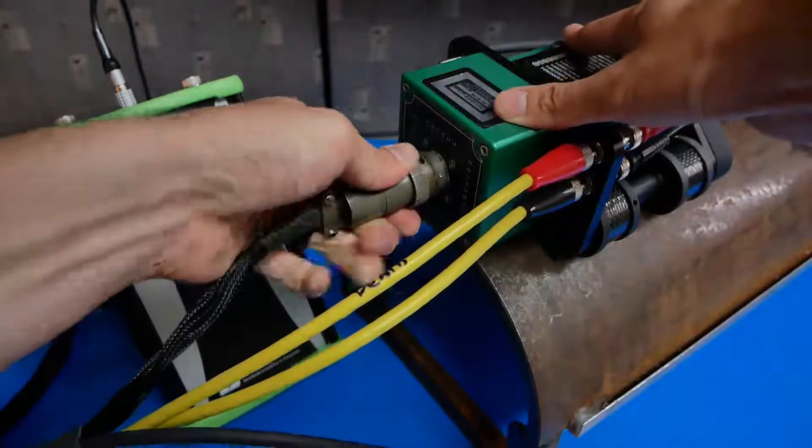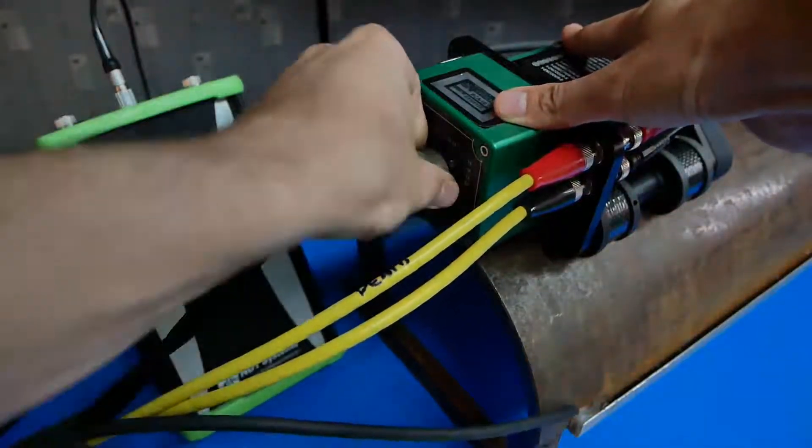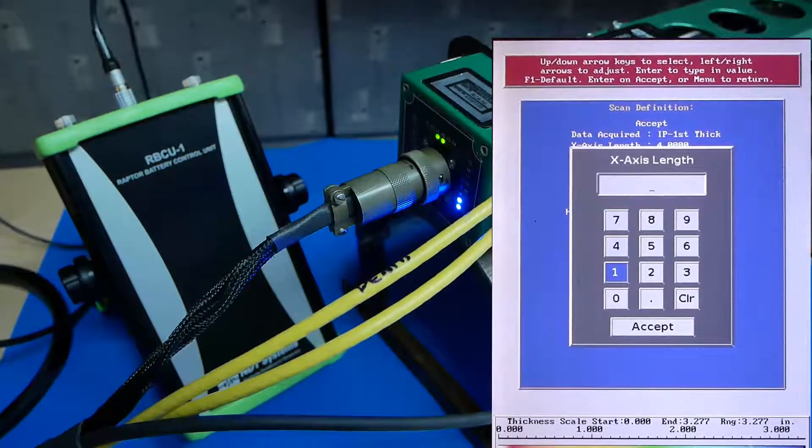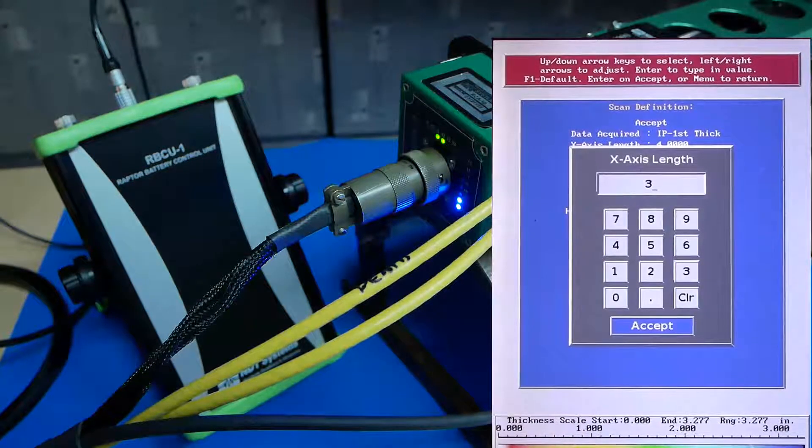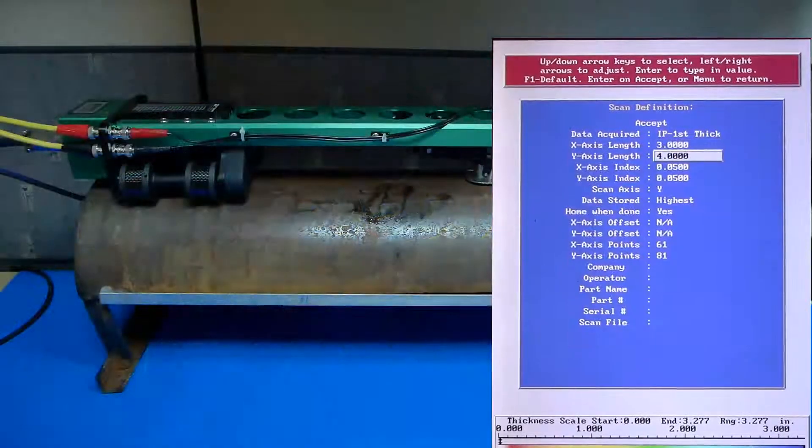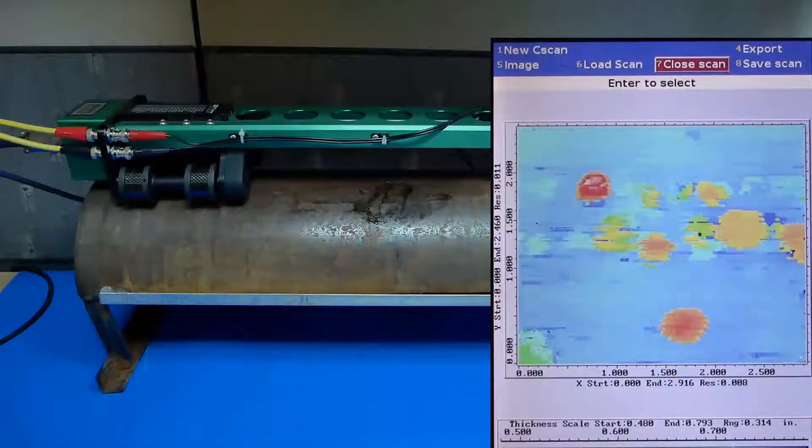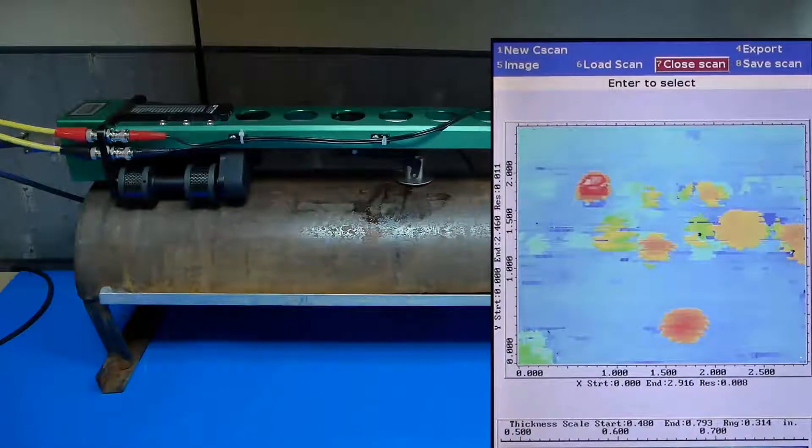Performing a scan is as easy as plugging the Raptor flaw detector into the scanner and inputting the parameters of your scan. As you can see here, setting up the inspection is quick and simple, and you can see the C-scan image being updated live on the screen as the scan is performed.